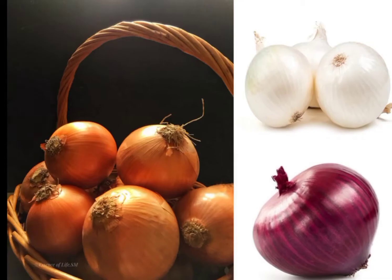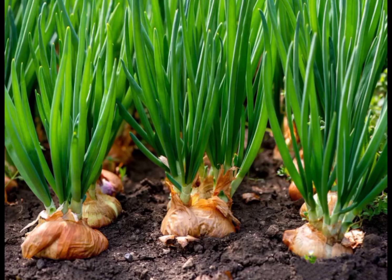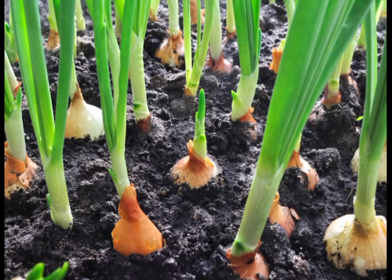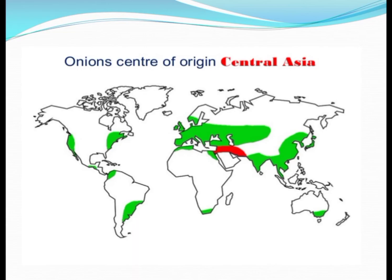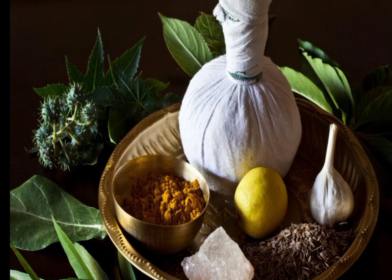Onion is one of the earliest cultivated crops. They are less perishable, transportable, easy to grow and could be grown in a variety of soils and climates. Onion is believed to be originated in Central Asia. In India, as early as the 6th century BC, the famous medical treatise Charak Sanhita celebrates the onion as medicine — a diuretic good for digestion, the heart, the eyes and the joints.